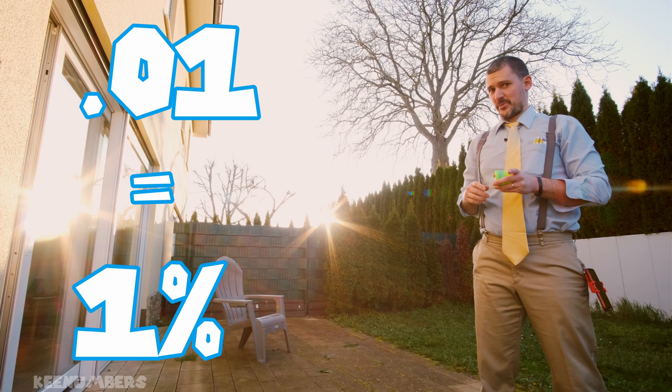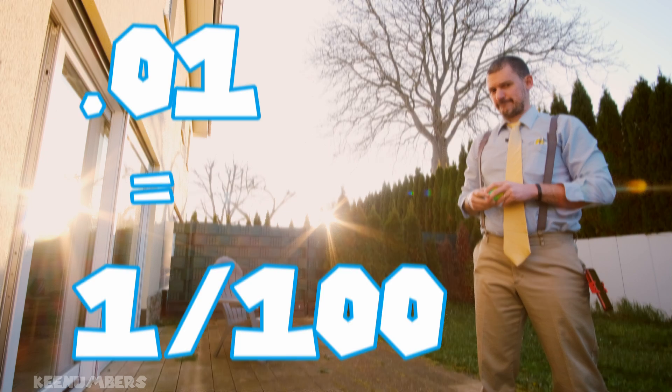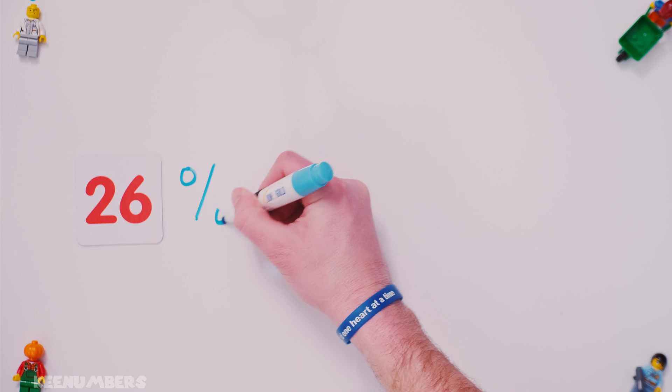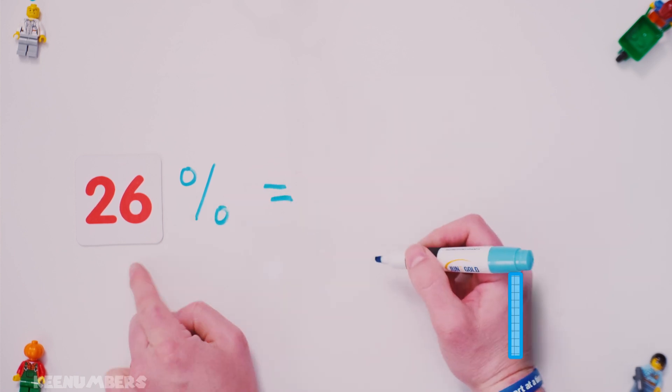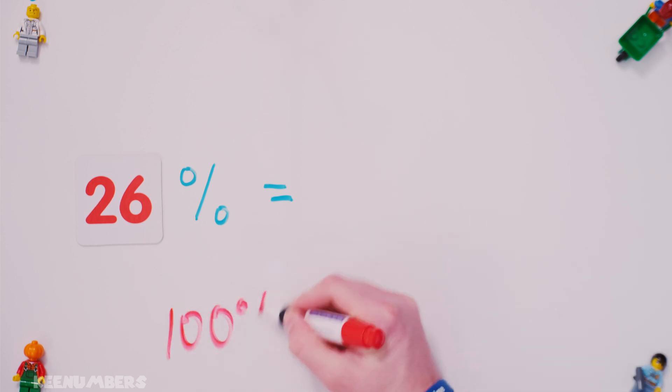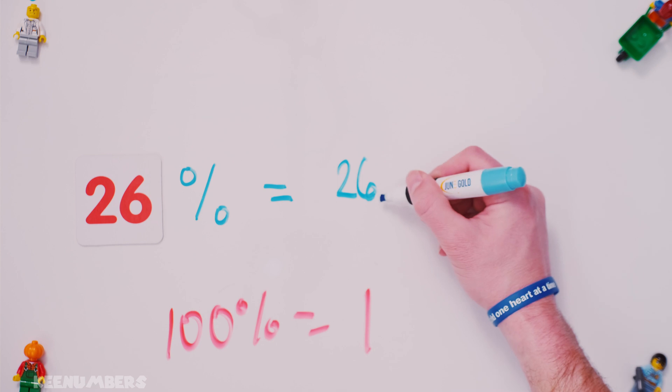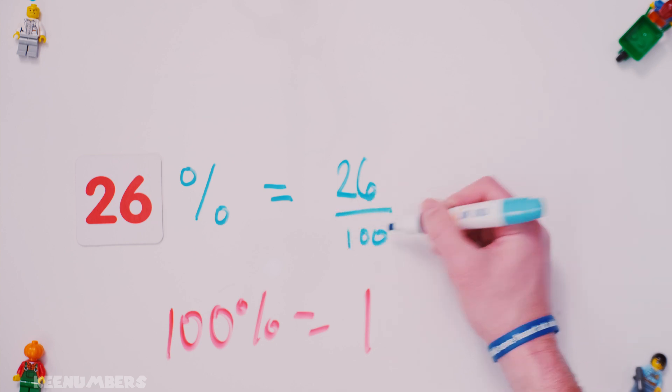That's one percent. It's also one one-hundredth. 26% is equal to... Well, if there are one hundred percents in one, then 26 of these percents is just gonna be 26 out of a hundred.